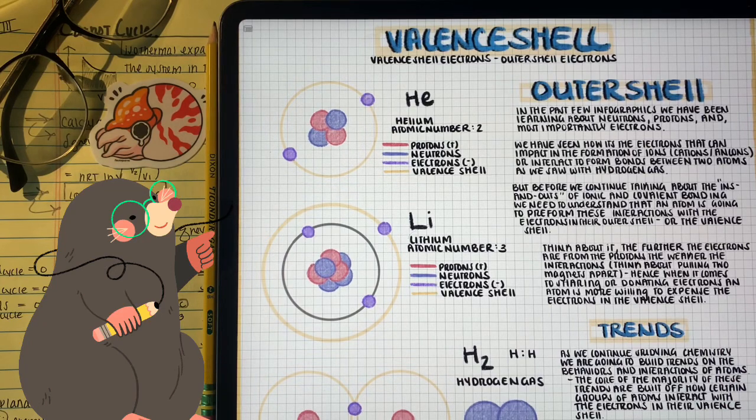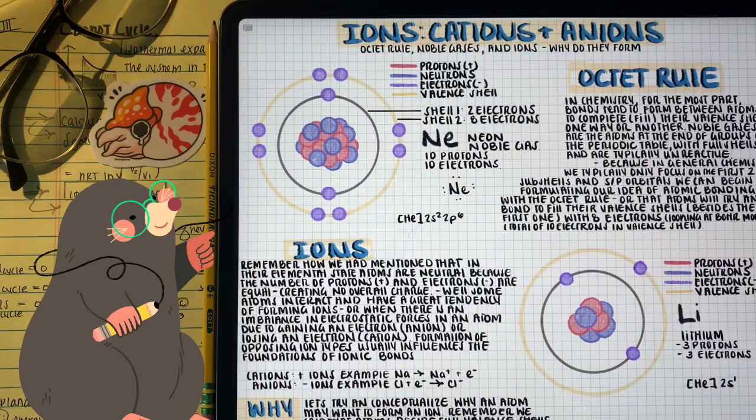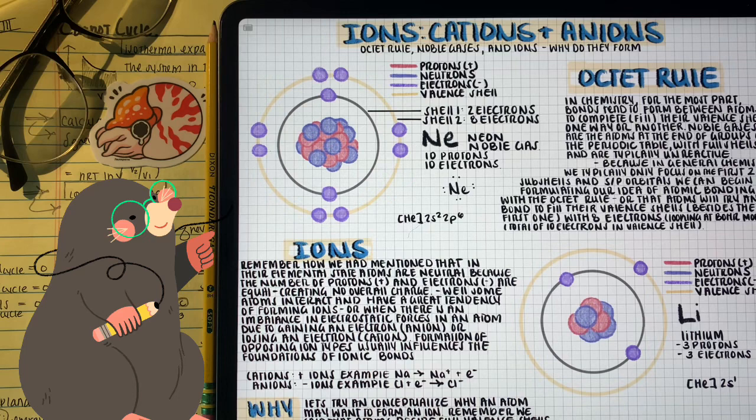Hello everyone, how's it going? In the last video, we talked about periodic trends, atomic properties, and different factors that might affect the valent shell electrons, and the formation of ions, such as cations that are positively charged, and anions that are negatively charged.